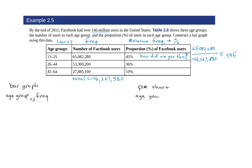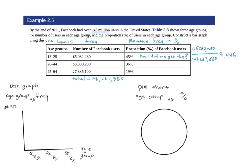So let's look at a bar graph. We're going to look at age group versus frequency. And then we'll also look at a pie chart with age group versus percent. A pie chart typically wants to put the percent there. So let's go ahead and start off with our bar graph here.